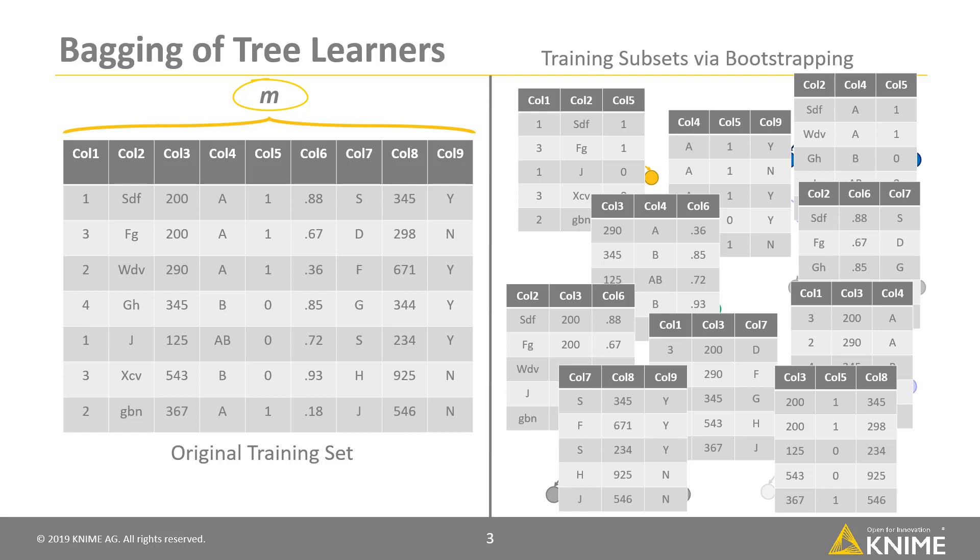a subset of randomly extracted square root of m input features is used to train each node in each decision tree.